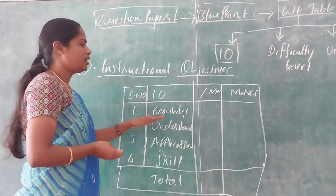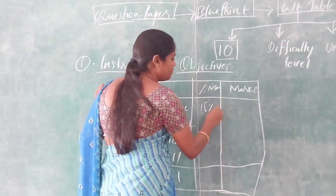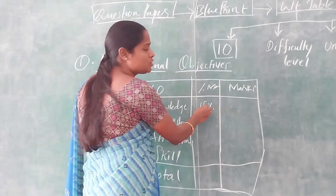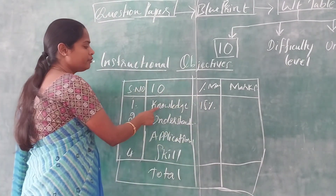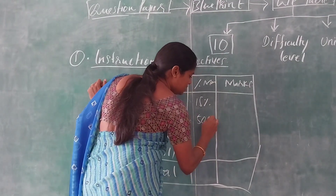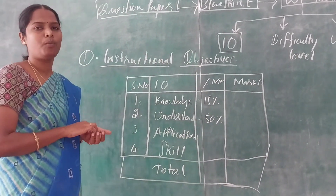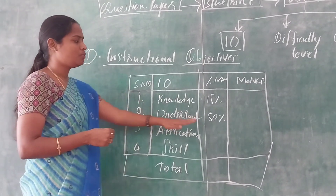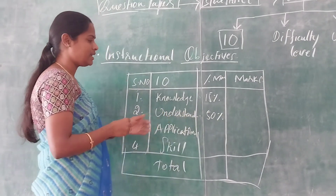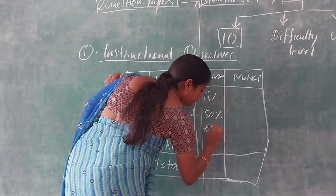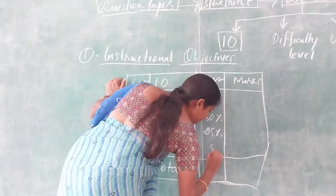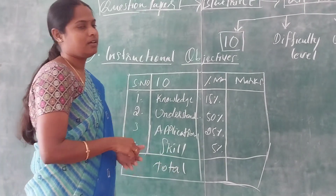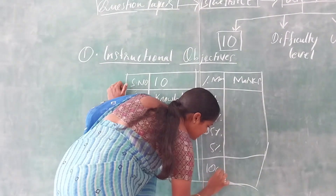For knowledge, we give fifteen percent of the total marks. For understanding, we give fifty percent — understanding is a very important objective since students should understand the concepts of whatever we teach. For application, we give twenty-three percent, and for skill we give five percent, because only higher-ability students can answer questions that come under skill. So totally we are having one hundred percent.